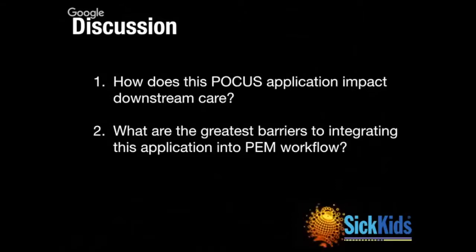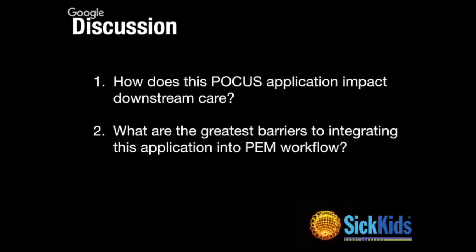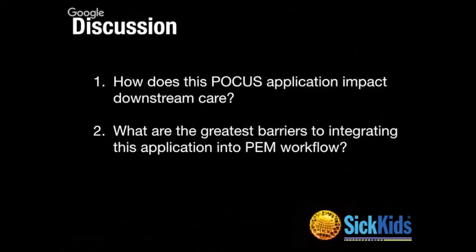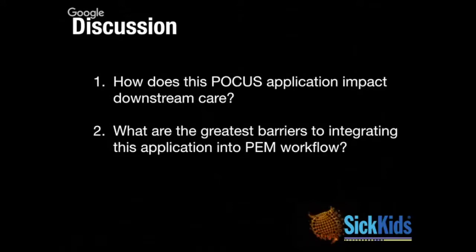The biggest thing this has helped with is the practical stuff. If you have a baby with a concerning story — sometimes they're very gaunt but often clinical suspicion is above a certain threshold — if I do the scan and see something that looks like pyloric stenosis, now I'm getting an IV and getting blood work organized. By the time they go up for their comprehensive scan, the surgeons basically have all the package they need to move forward.